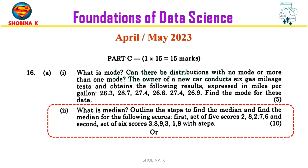First, we have a set of five scores: 2, 8, 2, 7, and 6. Second, we have a set of six scores: 3, 8, 9, 3, 1, and 8. For these scores we have to find the median with steps.